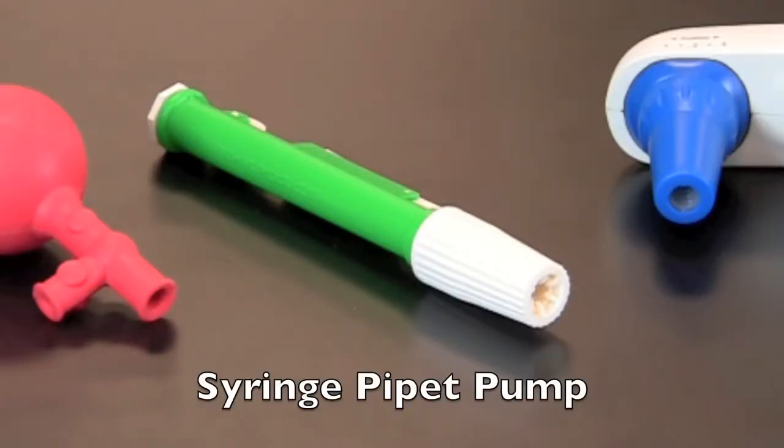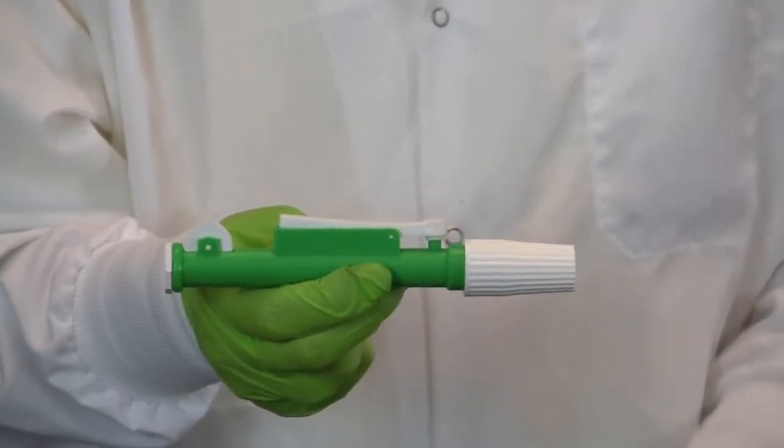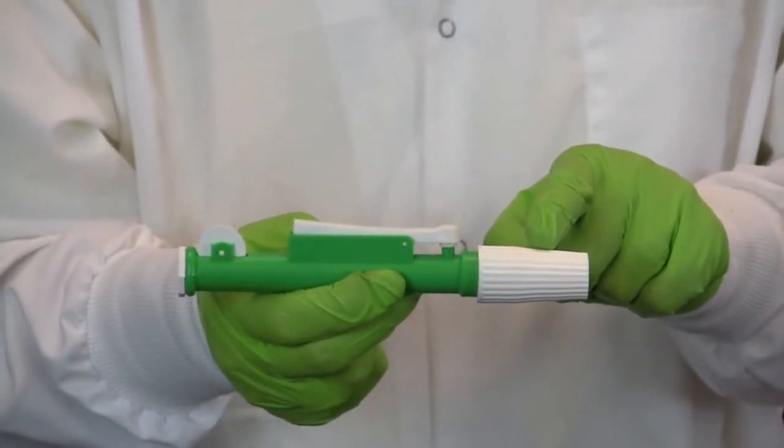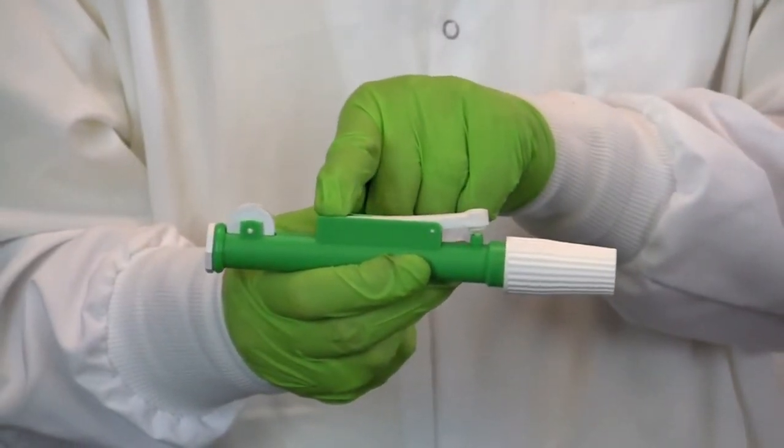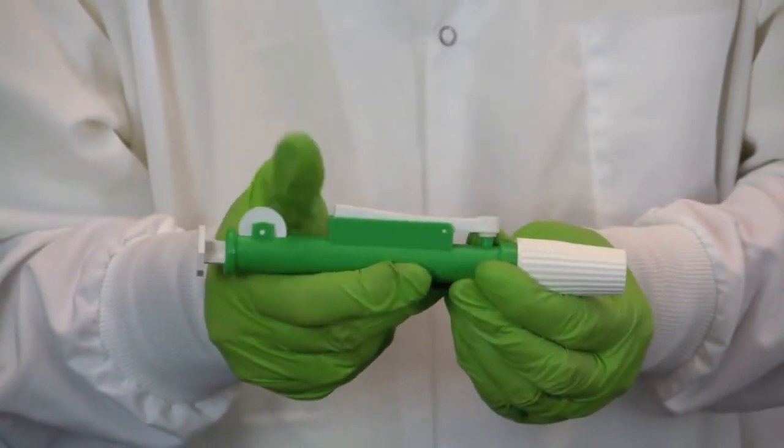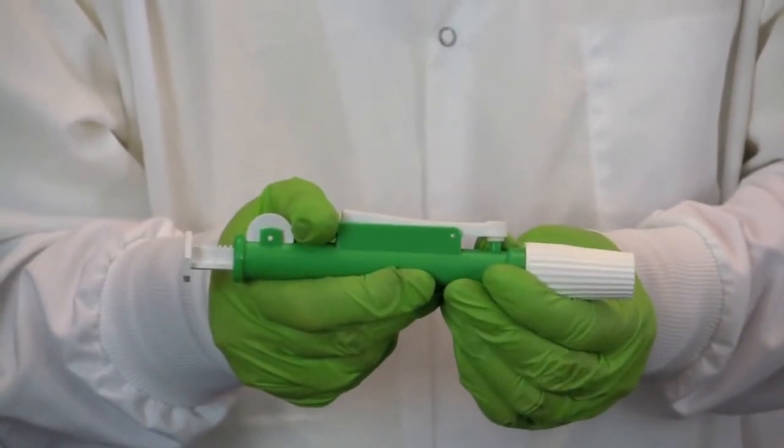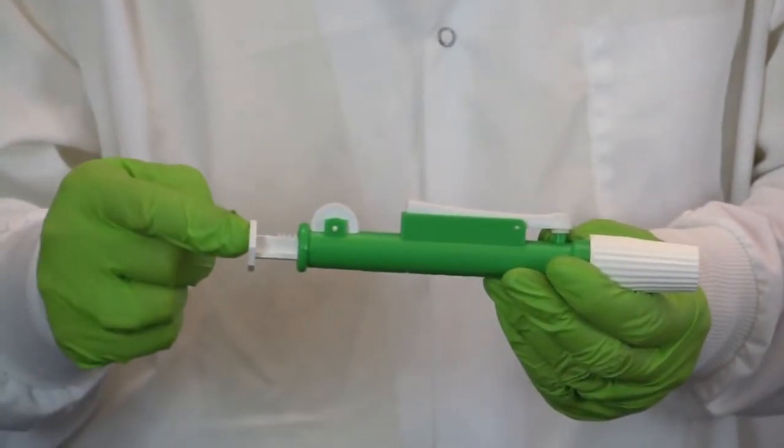This is a syringe style pipette pump. The parts of this pump include a gasket that attaches to the pipette, an exhaust valve which is used to expel the solution, a dial which is used to adjust the amount of solution transferred, and the plunger which is used to blow out any remaining solution.